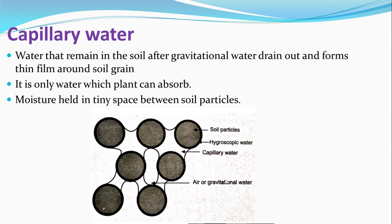These roots absorb only one type of water present in the soil, which is capillary water. Capillary water is the water which remains in the soil after draining of gravitational water. It forms a thin film around the soil particles, and it is the only water which can be absorbed by the plant. Capillary water is the moisture held within the tiny spaces between the soil particles, or simply, the adsorbed water molecules over the soil particles.